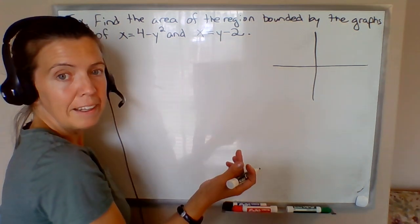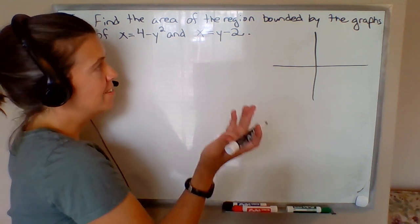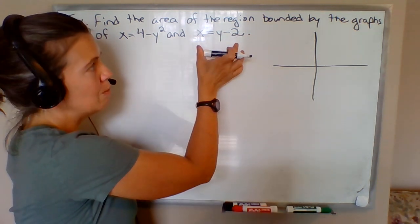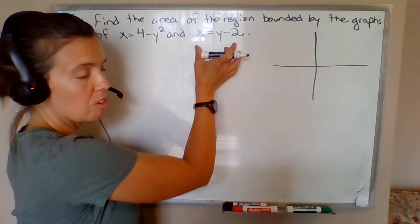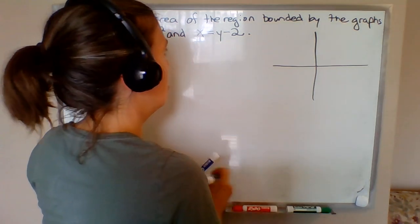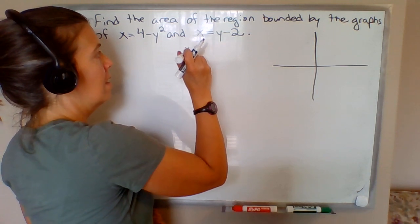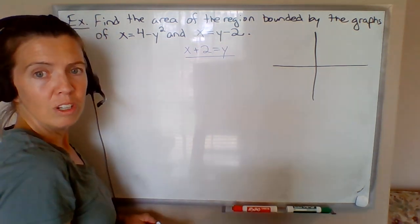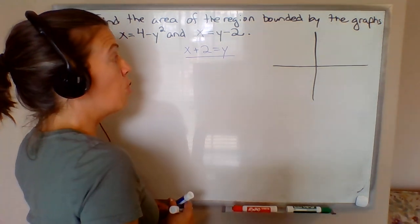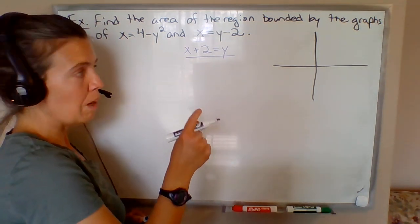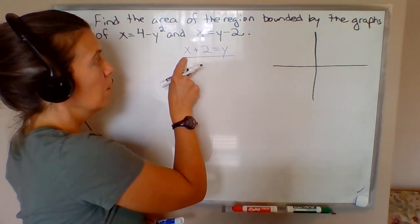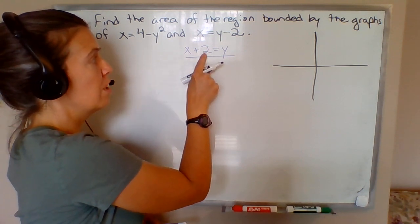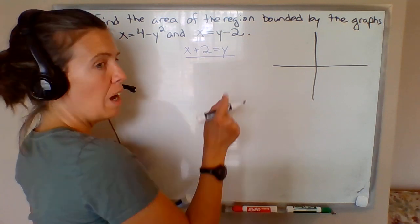Another way would be to solve it for y, which is easy enough. If you add 2 to both sides of this equation, then you'll have x + 2 = y. That's written in your mx + b form, where your slope is 1, like in the last example video. This time the y-intercept is positive 2.